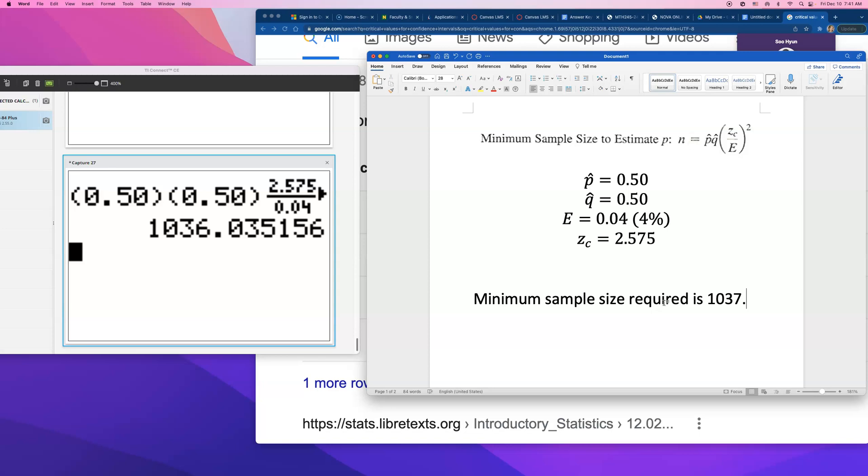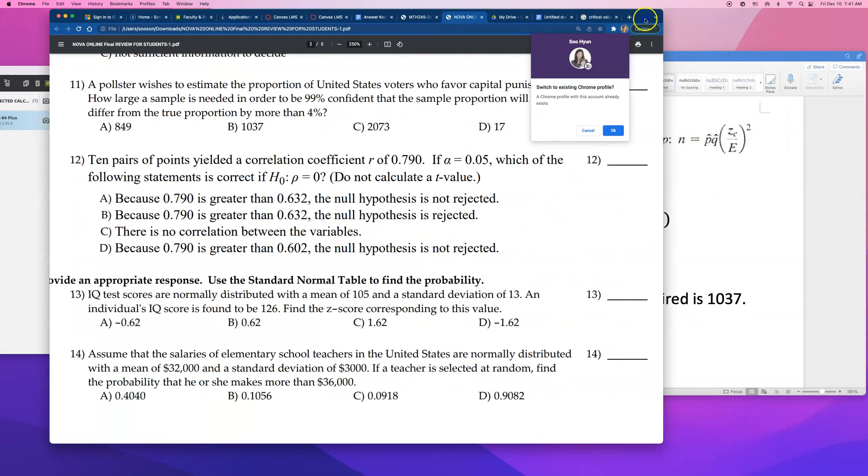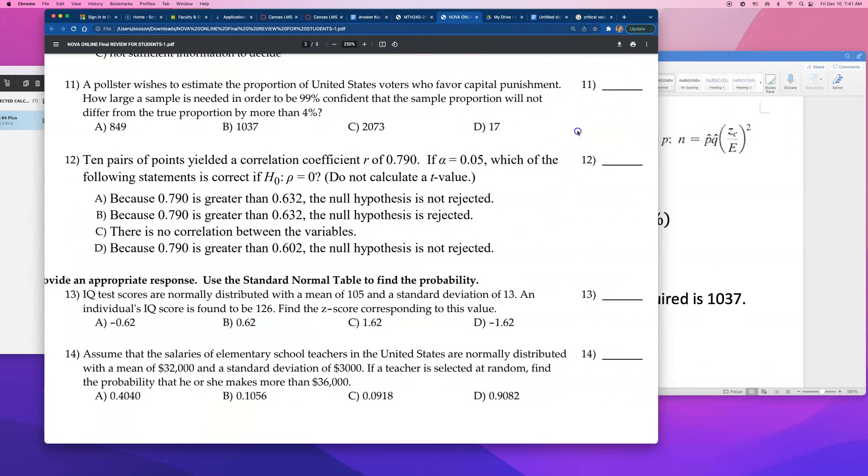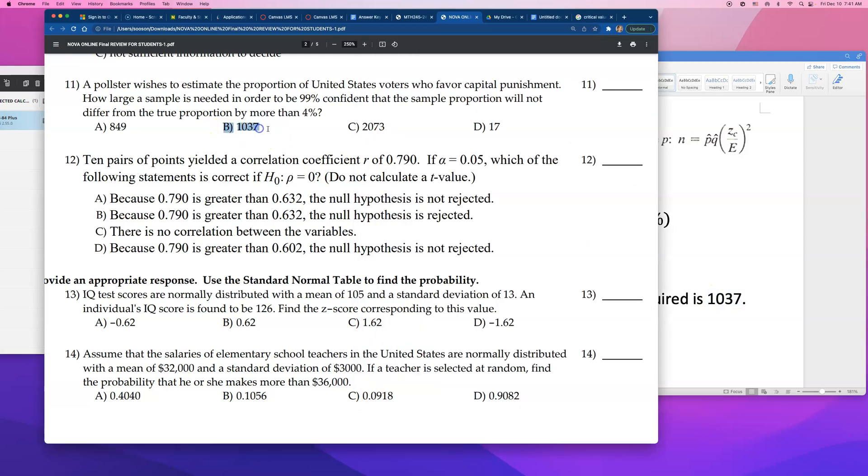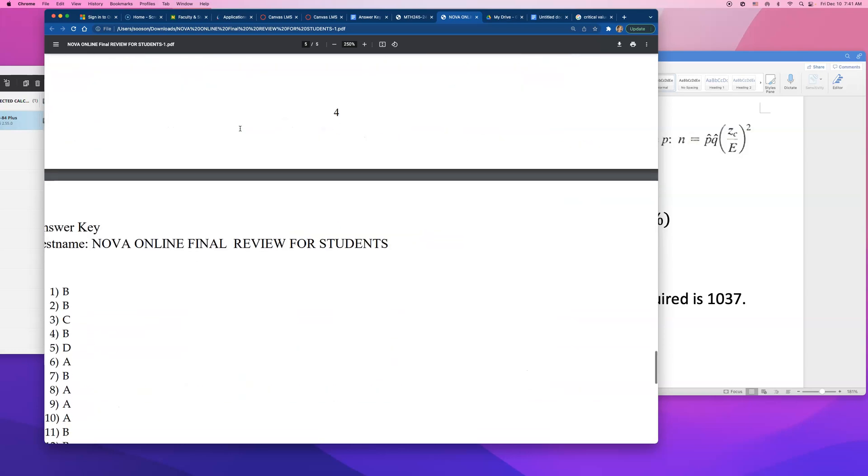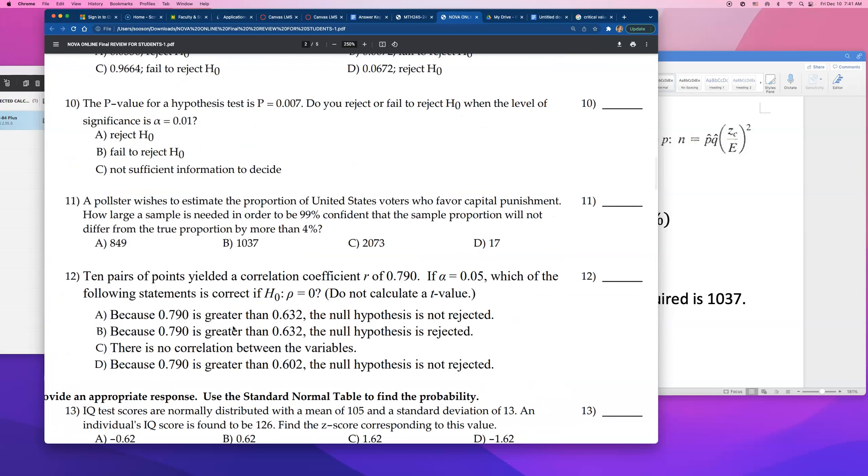And there could be a slight difference in the multiple choice because of how we rounded this critical value, but we're going to go with the closest one. So, let's go back to the problem and see which one matches, which one is closest to what we got. So, the answer that I want to find is 1037, and there we go, number 11. The answer is B, 1037. So, let's check this answer real quick. Is number 11 really B? Number 11 is B.